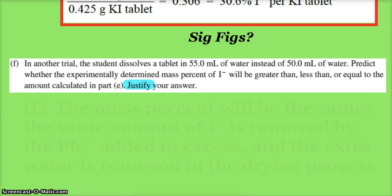Next part says: in another trial, the student dissolves the tablet in 55 milliliters of water instead of 50. Will the experimentally determined mass percent of iodide be greater than, less than, or equal to the amount calculated? Justify your answer.